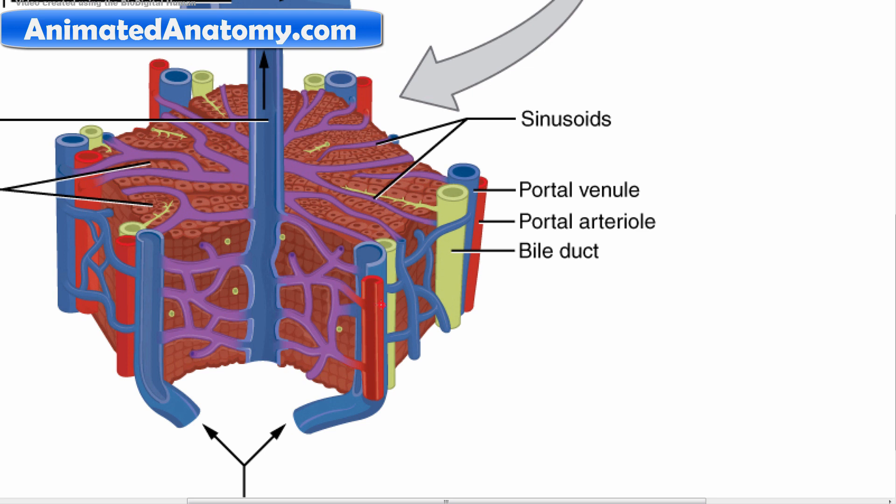Because it was misleadingly named triad, you can also find two more structures: lymphatic vessels and a branch of the vagus nerve.